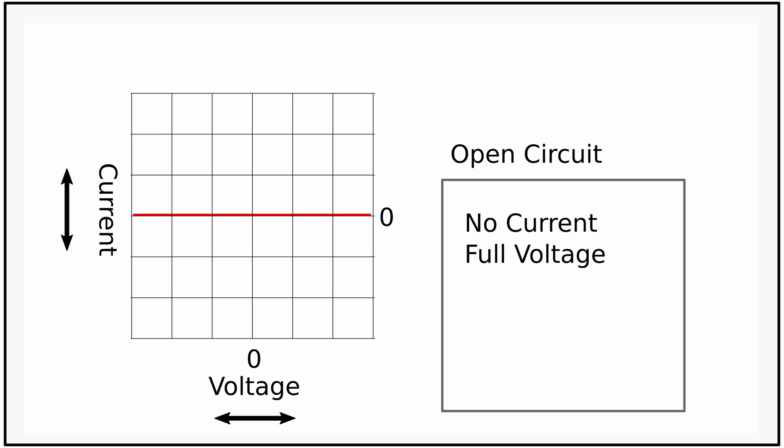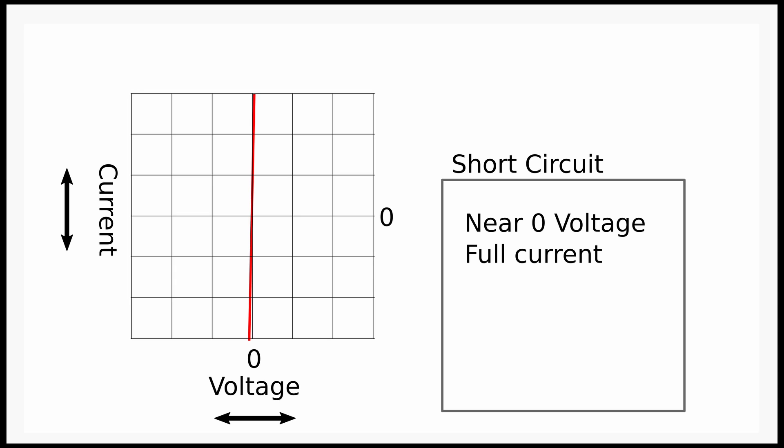With a shorted circuit, leads connected to each other, we will see a full deflection of current with hardly any voltage being developed.